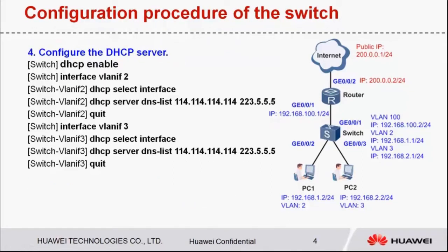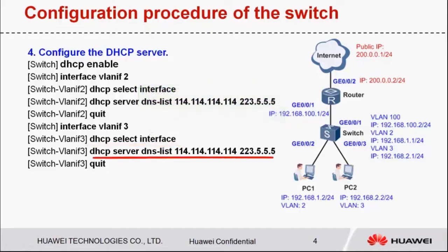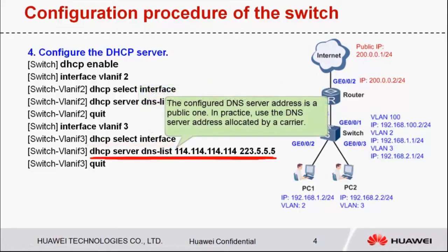Step 4: Configure the DHCP server. The DHCP server uses the interface address pool to allocate IP addresses to users. The configured DNS server address is a public one. In practice, use the DNS server address allocated by a carrier.